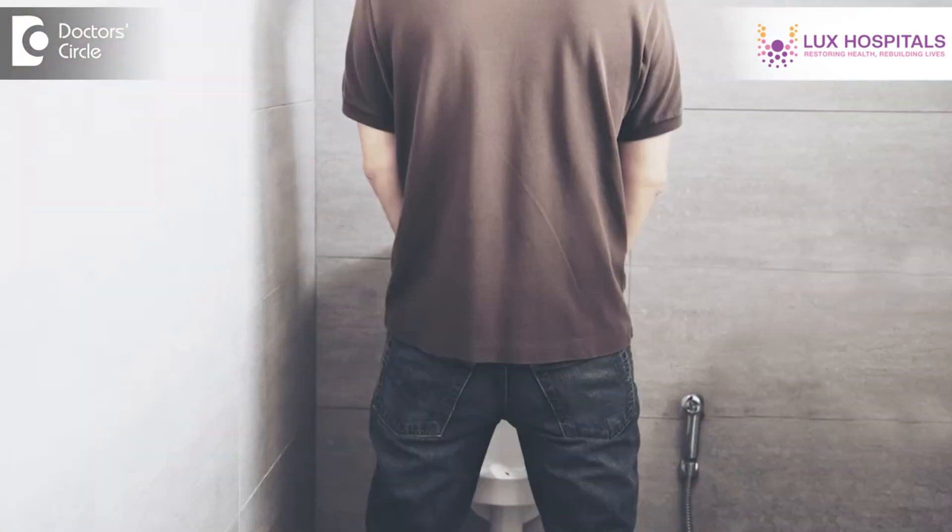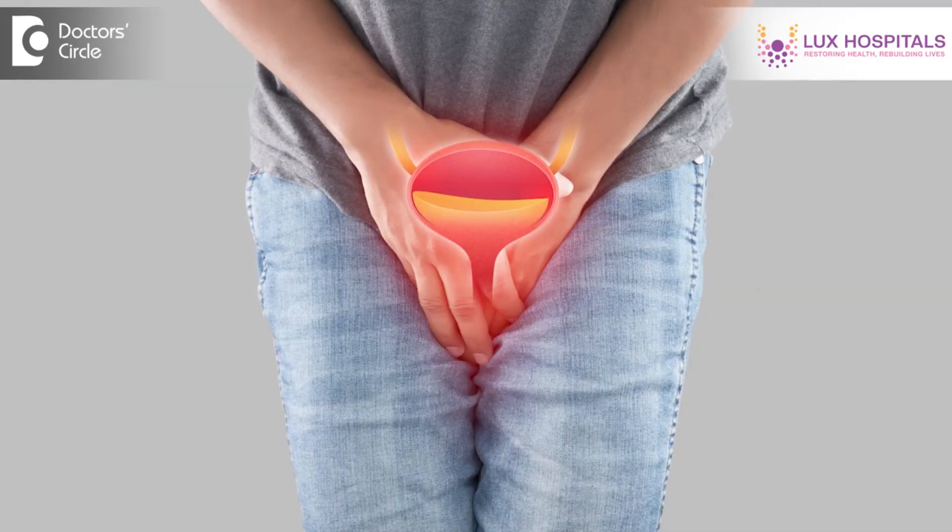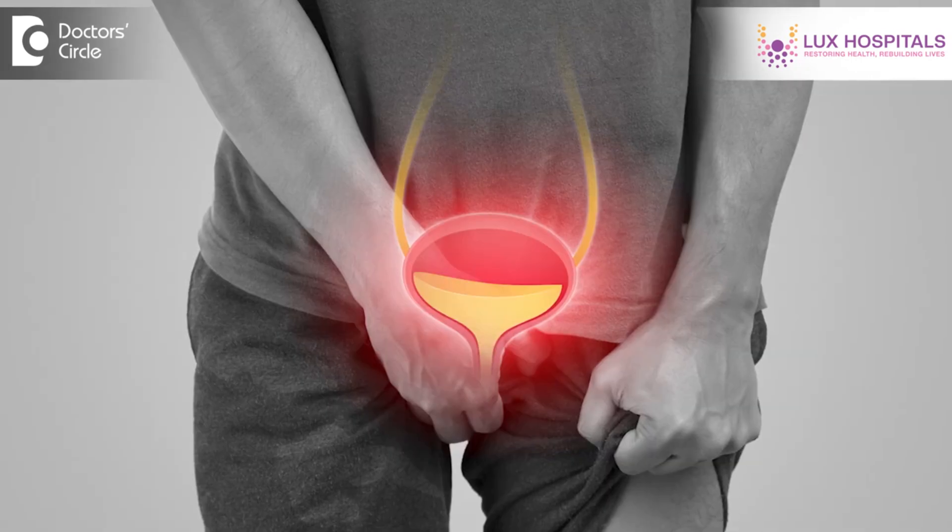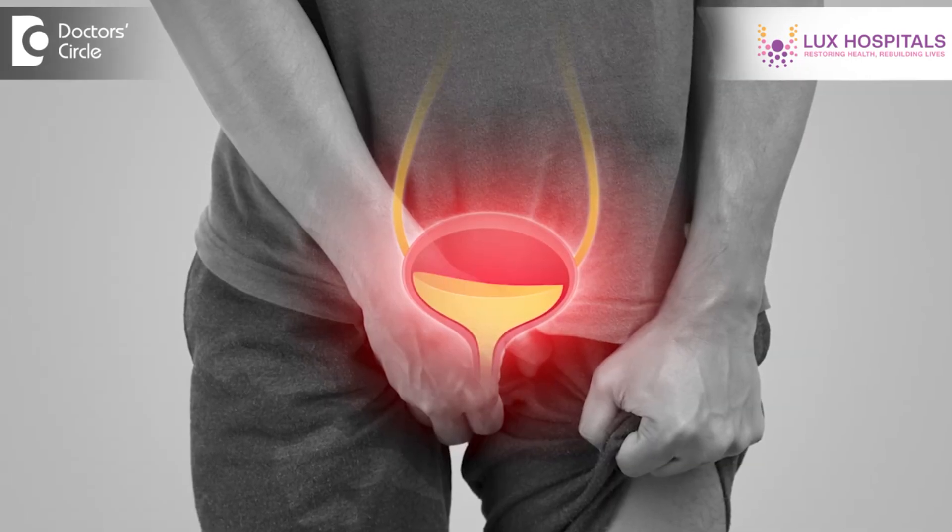Whenever you have symptoms of urethral stricture, the most common symptoms are decreased urinary stream, increased frequency, and pain while passing urine. Additionally, if associated with infection, some people may have hematuria. Some patients also feel they want to pass urine again as they are not able to complete the void. These are the symptoms most commonly present with urethral stricture.